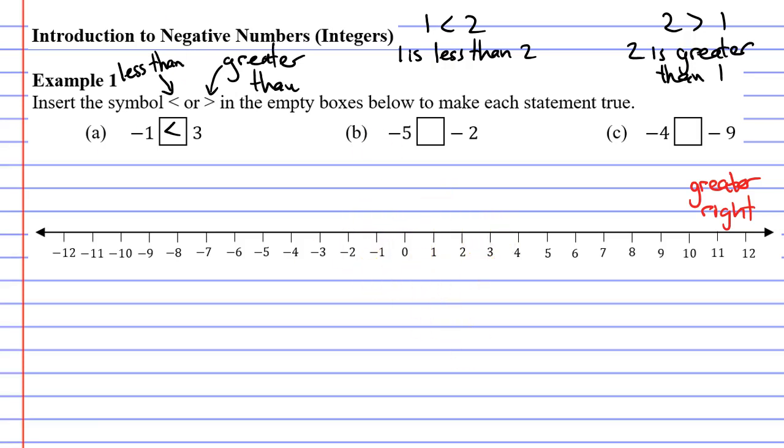Moving on to question B. We've got the numbers negative five and negative two. Negative two is closer to the right, so negative two is the greater number. So, in our statement, we're going to say that negative five is less than negative two.